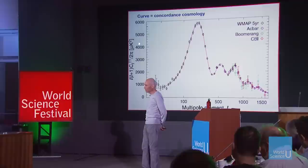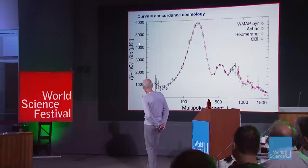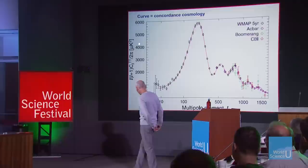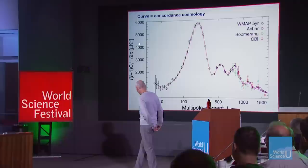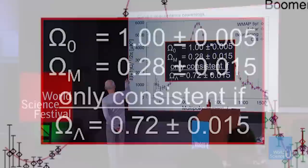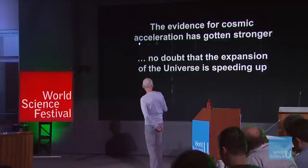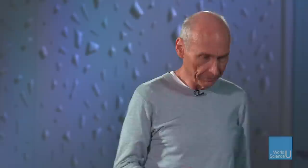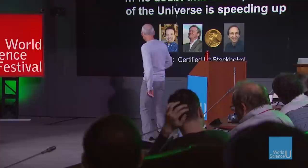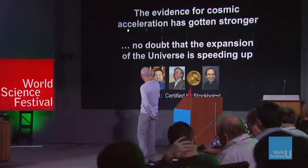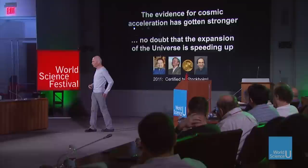The two teams collected about 50 supernovae each; since then we've added another couple of thousand plus different lines of evidence. The microwave background also supports this — matter is only about 30% of the critical density, so there must be something else out there, like dark energy. In 2011, Stockholm certified this by giving the Nobel Prize to Adam Riess, Brian Schmidt, and Saul Perlmutter for this remarkable discovery.